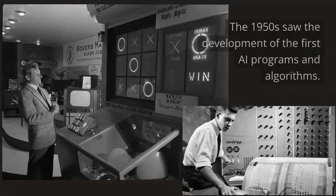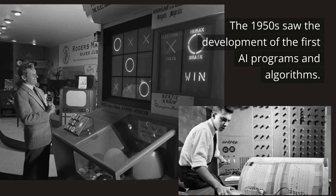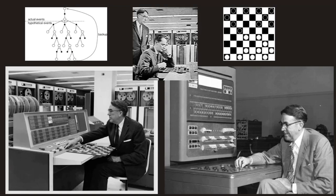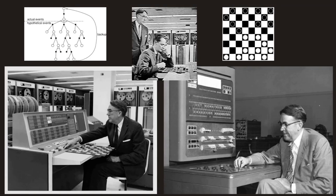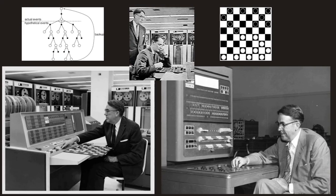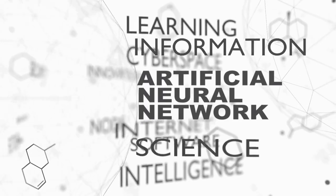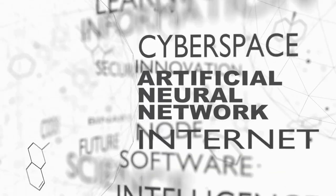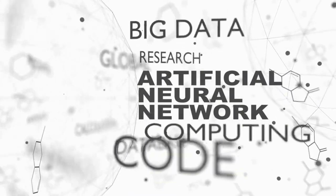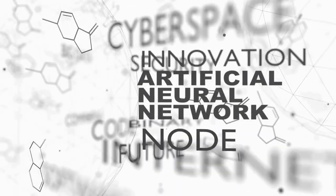The 1950s saw the development of the first AI programs and algorithms. Notable milestones include Samuel's Checkers player, the Logic Theorist, the General Problem Solver, and the Perceptron. These early AI achievements paved the way for future innovations in machine learning, problem solving, and artificial neural networks.